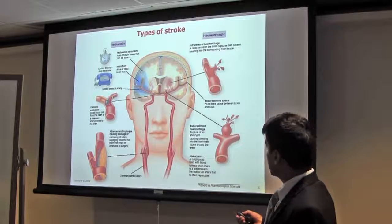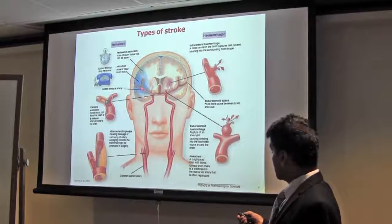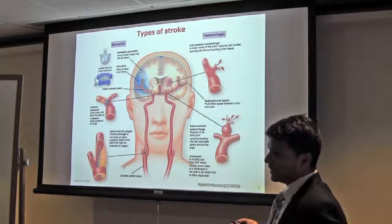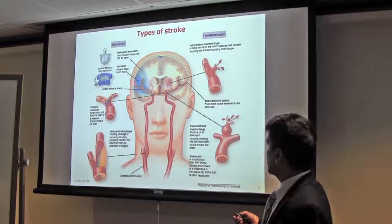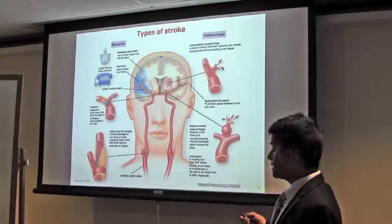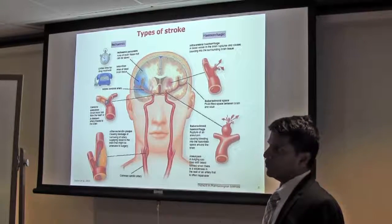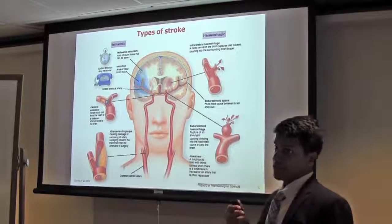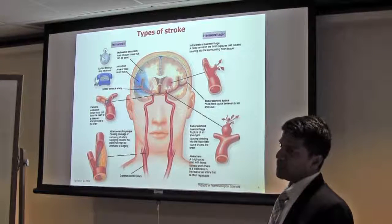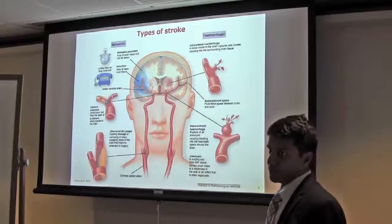Just adjacent to the blood, there is immediate cell death, which we call the core area, and there is a surrounding area where the cells still survive, but eventually they will die if there is no intervention. We call this the penumbral region. That is the main target of research.